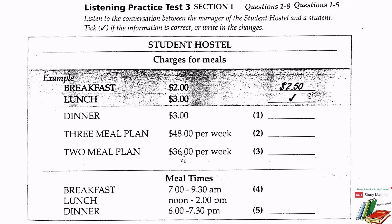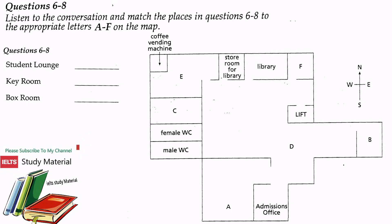So which plan would you like? I'd like to think about it please, I need to check my lecture schedule. Now look at questions six to eight. Listen to the conversation between the student and the manager and match the places in questions six to eight to the appropriate letters A to F on the map.